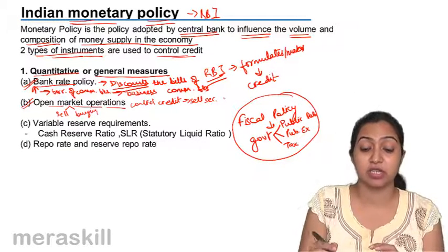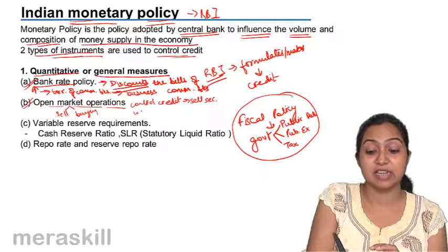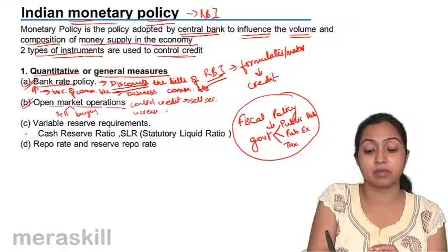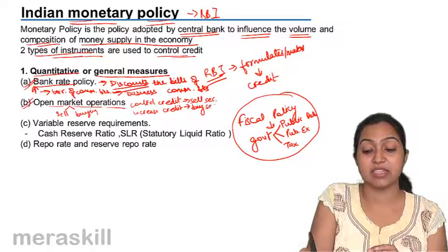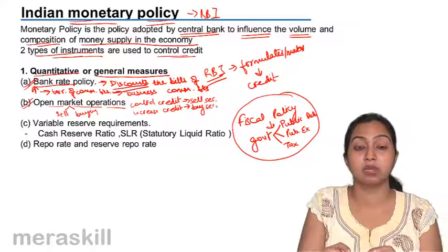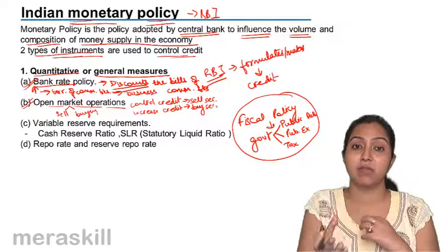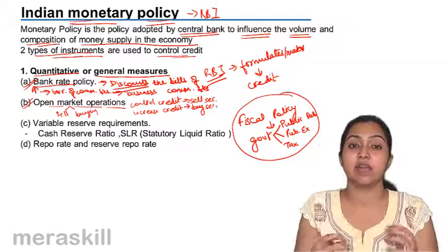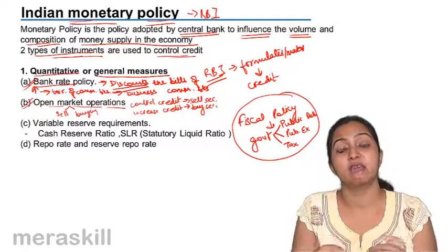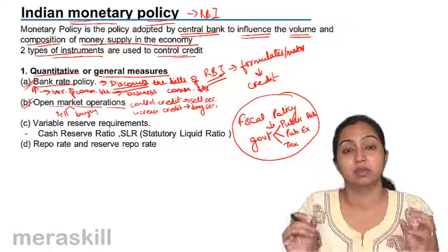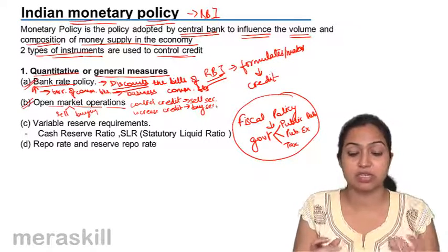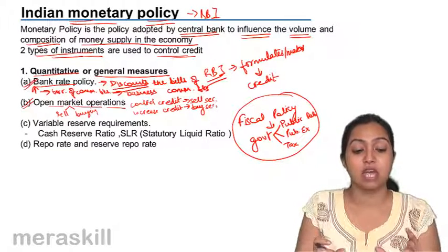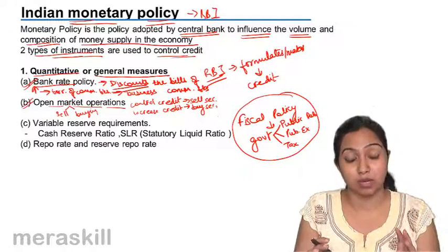When they want to increase credit, they buy securities. RBI buys securities from commercial banks and gives them more money. Commercial banks then have more money to give to businessmen. Businessmen invest, production increases, income increases, and demand increases. This is how open market operations work.